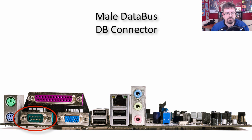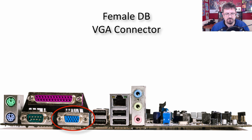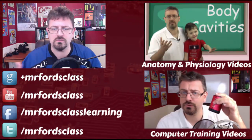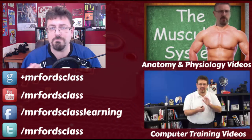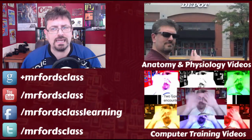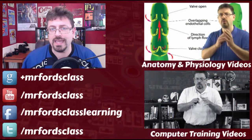Down here we see the data bus DB connector — this one happens to be a male connector. Over here is also a DB serial connector, a female connector — more appropriately called a VGA connector. This is where you would plug in the monitor, though this is kind of disappearing as we're seeing higher-definition connections from computers. That was a lot to take in, and this was an overview of the components of the motherboard. You do need to know these and identify them on the exam. As we go through these lessons, we will dive into these connections in more detail. Our next video will get even further into the computer by taking a look at chipsets.